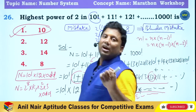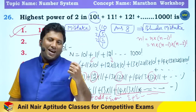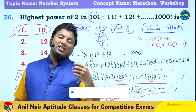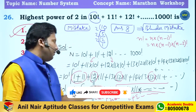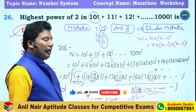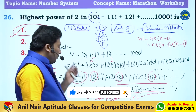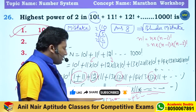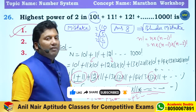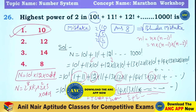Even plus even is even, even plus odd is an odd number. That is the conclusion for the odd/even analysis. I hope the concept is clear.